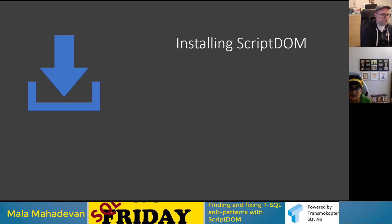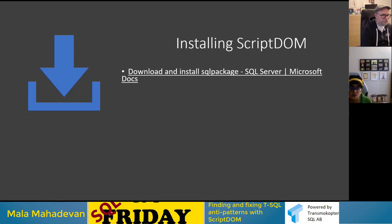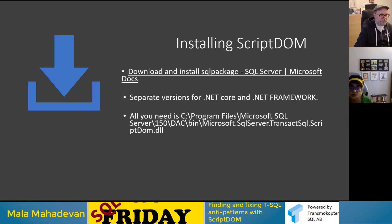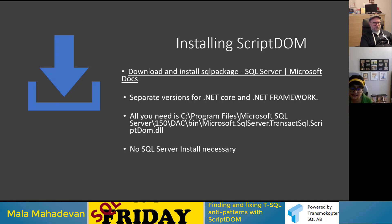Installing ScriptDOM is really easy. You can go to the DACfx link — I'll share the URL in the slide deck. It comes with separate versions for .NET Core and .NET Framework; I'm using the .NET Framework version for demos. All you need is one DLL. I'm using SQL Server 2017, so it's the 150 version. You can just grab that one DLL, copy it to wherever you want to run scripts from. It has no other dependencies and absolutely does not need SQL Server installed.